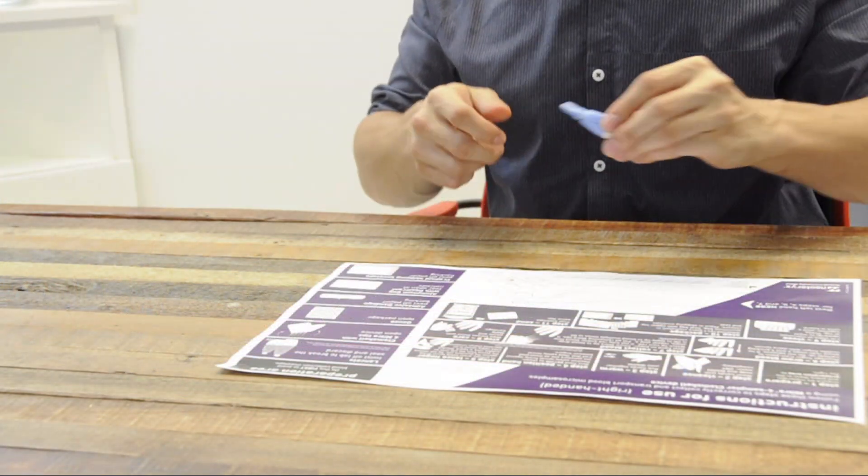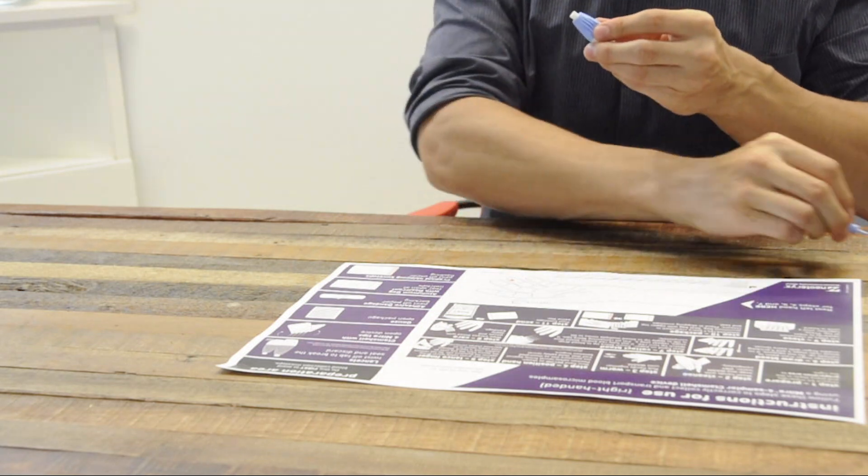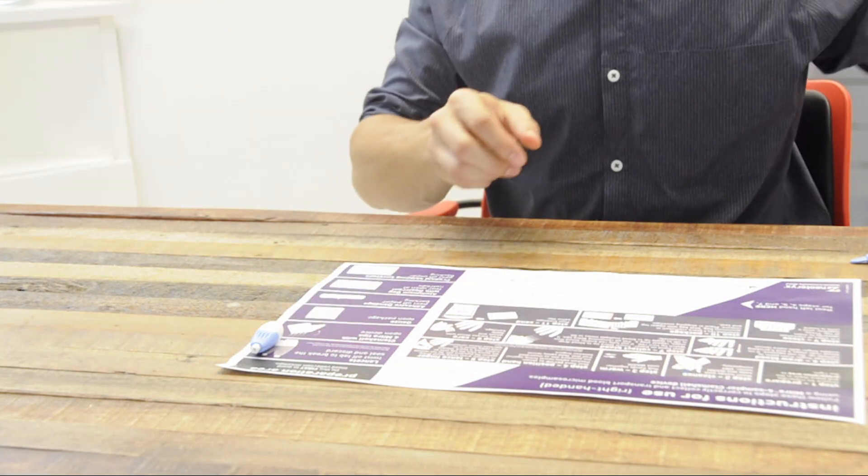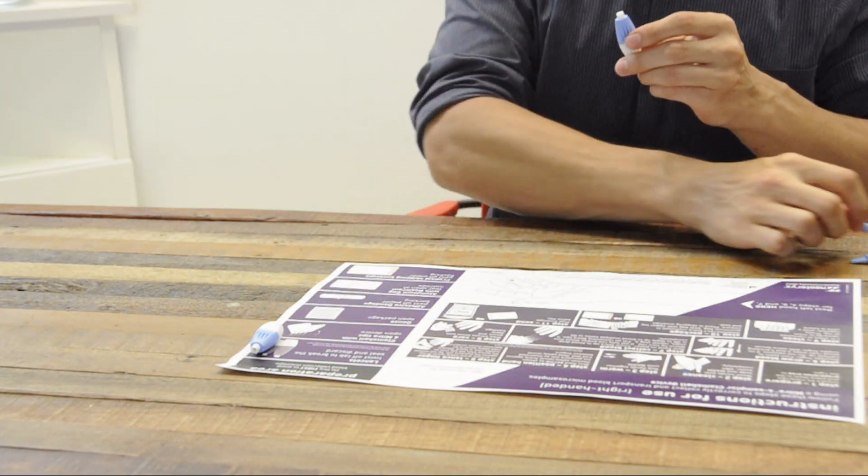Now prepare the lancets. Twist off the tab to break the seal and place the lancets close to you. Prepare all of the lancets in the box in this way.